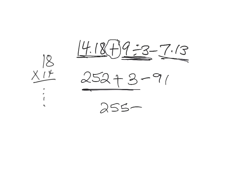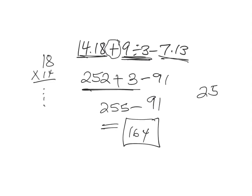Then we subtract ninety-one from two hundred fifty-five. Using our subtraction skills we get one hundred sixty-four as the final answer. That's another example that deals with order of operations.